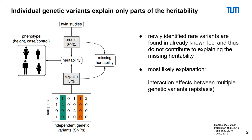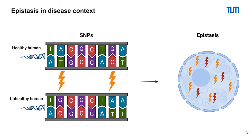Epistasis are interaction effects between multiple genetic variants. Let's have a look at epistasis in a disease context. On the top, you can see the nucleotides of the DNA of a healthy human. On the bottom, you can see the nucleotides of an unhealthy human.